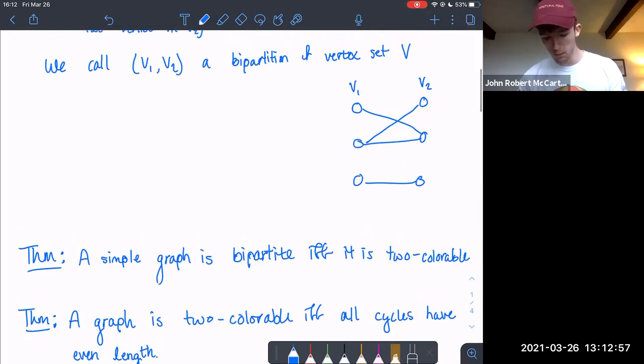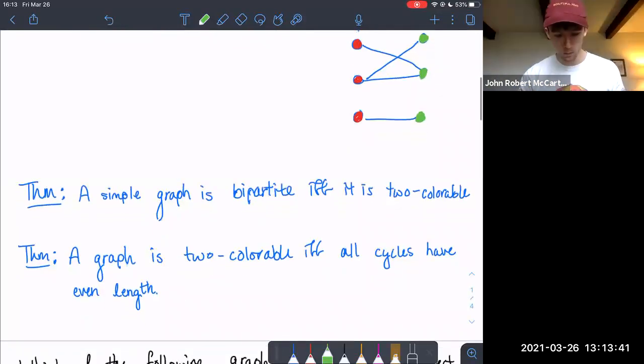So for instance, if we wanted to run through this example that I've drawn above, I'll use red and green. So one way to color this graph is to just color each vertex in V1 red and each vertex in V2 green. So notice that, again, since this is a bipartition, any red vertices on the left do not share an edge with any other red vertices, only green vertices. And the same for the green vertices. So that's one theorem that we're going to be using.